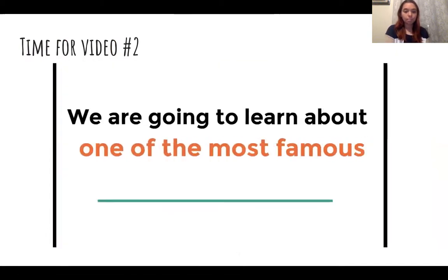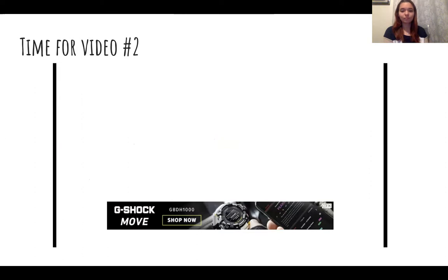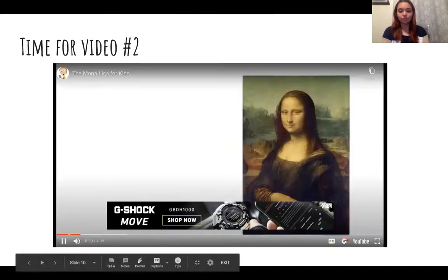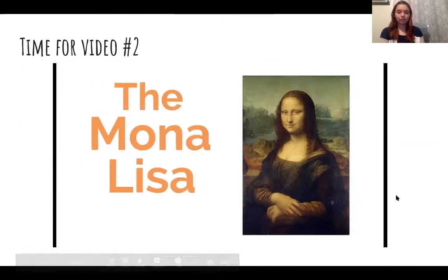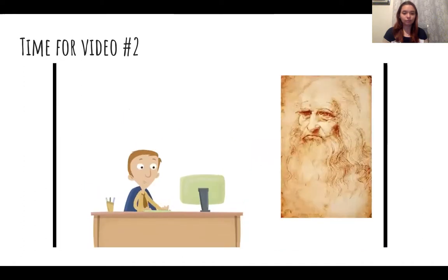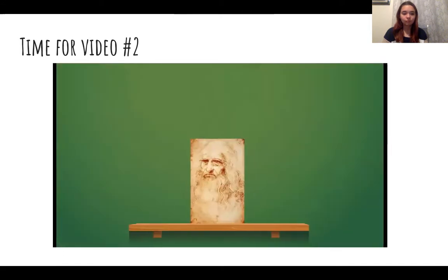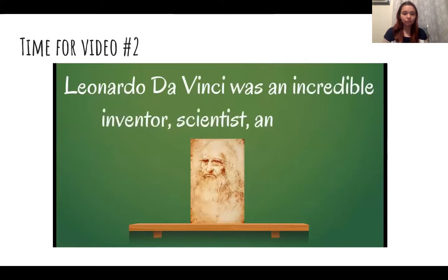We are going to learn about one of the most famous works of art in all of history. What is this painting called? The Mona Lisa. This video is all about the Mona Lisa. The Mona Lisa is a painting from the Renaissance period in Italy — an amazing time for the arts, science, and culture in Europe. It was painted by Leonardo da Vinci. Leonardo da Vinci was an incredible inventor, scientist, and artist. He kind of did it all — he was like the Renaissance champion.